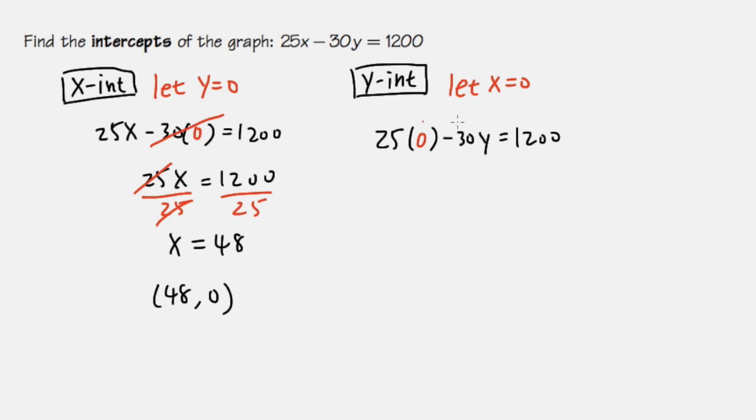And then 25 times 0 is just 0. So we just have negative 30y equals 1200.